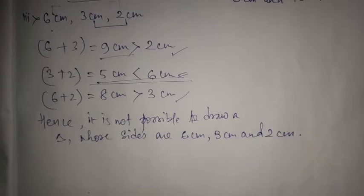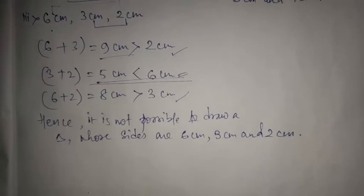In question 1, we stopped early because we got an equal-to result immediately. For conditions equal to or less than, we do not consider those as a valid triangle. In question 2, for every possible combination the sum was always greater than the remaining side, so the triangle was possible. That concludes question number 1.